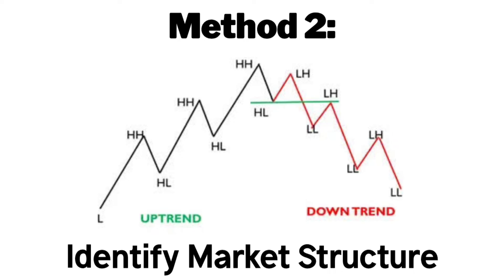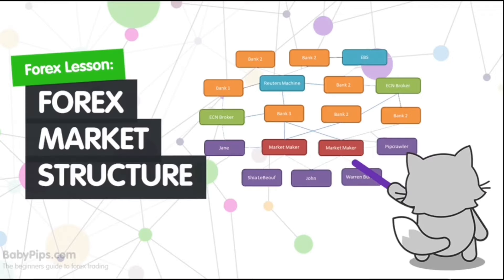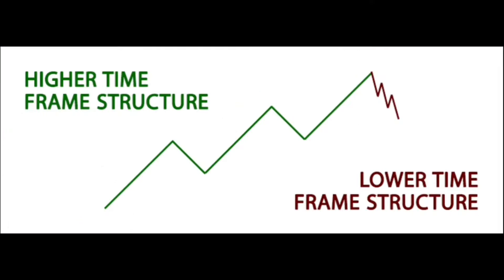The second method to identify trends in the market is by identifying market structure. Market structure is the behavior, condition, and flow of the markets. It basically highlights support and resistance levels, swing highs, and swing lows. The amazing thing about market structure is that you can identify it on any timeframe — the lower the timeframe, the more short-term the trend, and the higher the timeframe, the more long-term the trend.